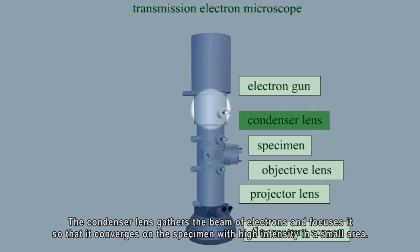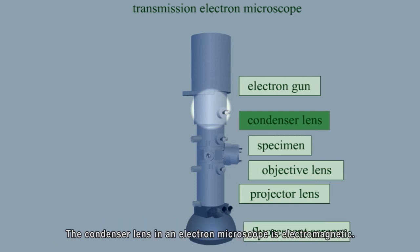The condenser lens gathers the beam of electrons and focuses it so that it converges on the specimen with high intensity in a small area. The condenser lens in an electron microscope is electromagnetic.